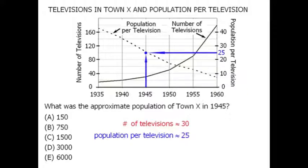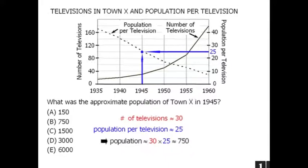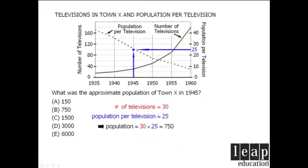So if there were 30 television sets, the population would have been 30 times 25, or 750. So our answer here is B.